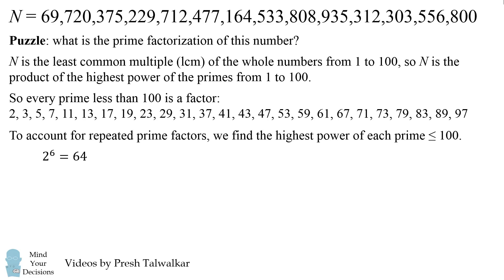Now, one more factor of 2, 2 to the 7th, would actually be larger than 100. It would be 128. So we do not have 7 factors of 2. Then we have 3 to the power of 4 is equal to 81. The next higher power would be higher than 100. We have 5 squared is equal to 25, 7 squared is equal to 49.